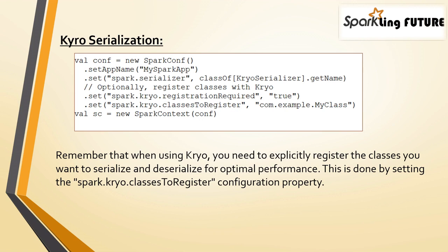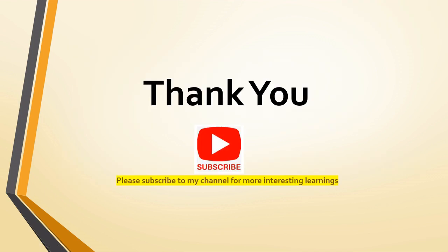When using Kryo, we have to explicitly register the classes for which we want Kryo serialization enabled, so that optimal performance can be expected for those classes. The configuration property for this is spark.kryo.classesToRegister — you provide the full class name and then create the SparkContext. This same setting can also be added when creating a SparkSession. Hope this video is useful — thank you for watching, please subscribe to my channel for more interesting learnings.